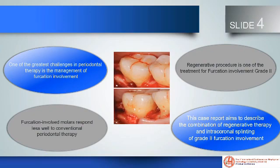One of the greatest challenges in periodontal therapy is the management of furcation involvement. Furcation-involved molars respond less well to conventional periodontal therapy. Regenerative procedure is one of the treatments of furcation involvement grade 2. This case report aims to describe the combination of regenerative therapy and intra-coronal splinting of grade 2 furcation involvement.